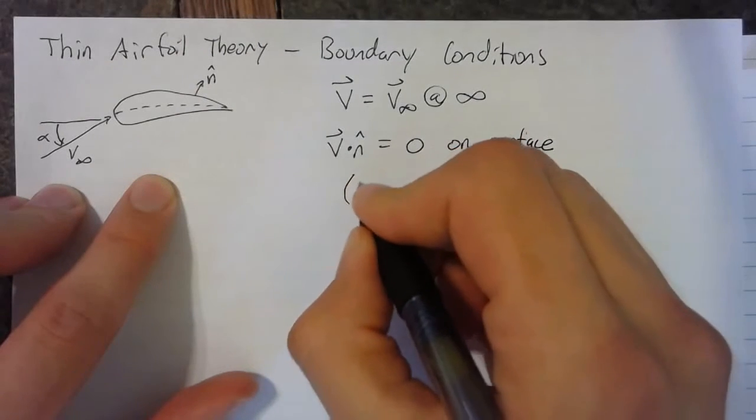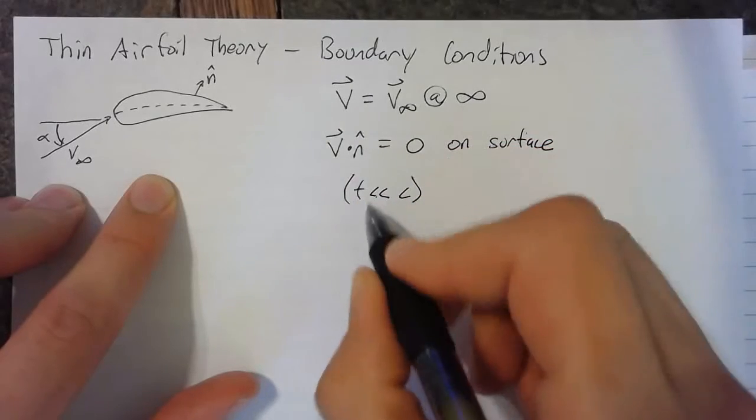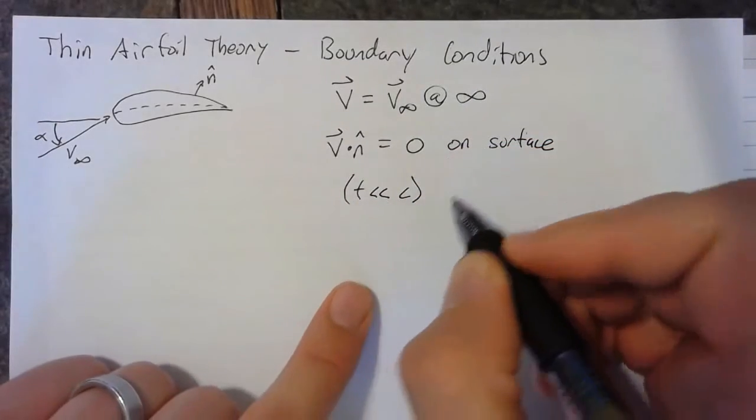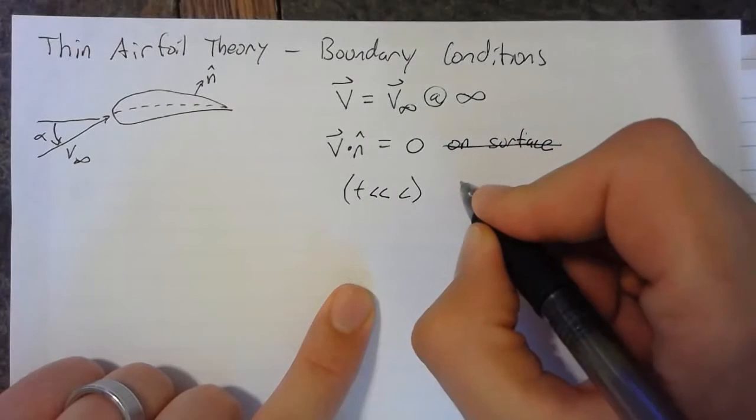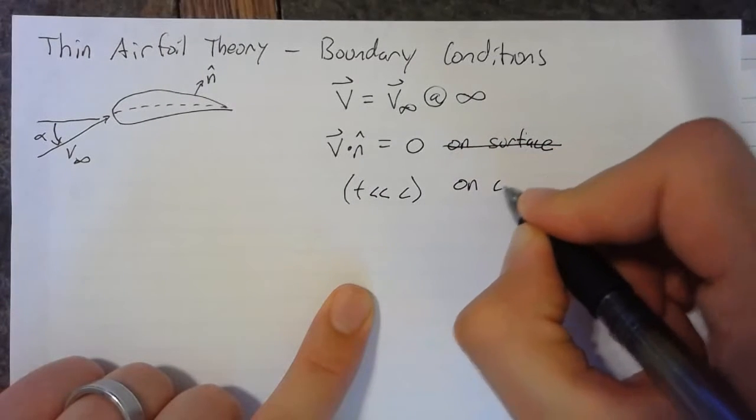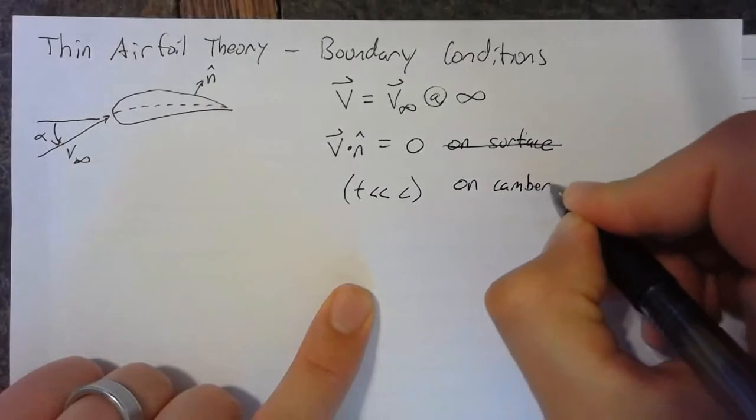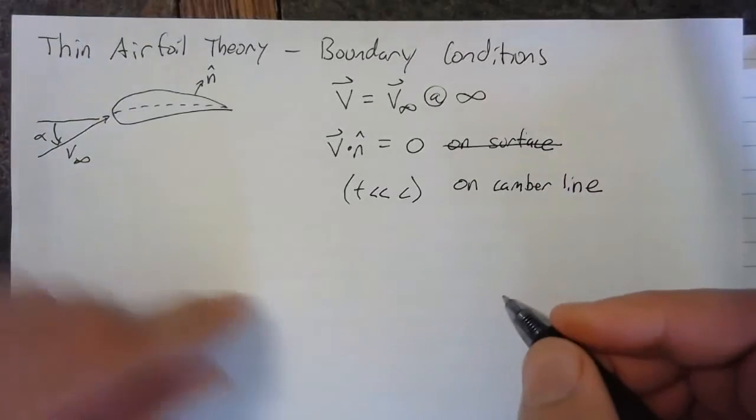However, since we're making this assumption that the thickness is much less than the chord, we can say that instead of on the surface, we want this to be on the camber line. So what does this mean?